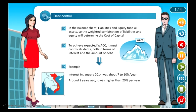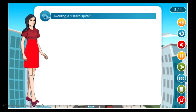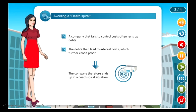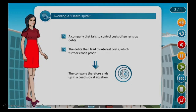Unstable monetary policy, especially in developing countries, means that floating interest rates may fluctuate unpredictably. Many companies have unfortunately gone bankrupt. Avoiding a death spiral: a company that fails to control costs often runs up debts. The debts then lead to interest costs, which further erode profit, and the company therefore ends up in a death spiral situation.